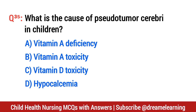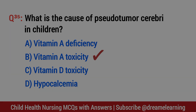Question number 35. What is the cause of pseudotumor cerebri in children? The right option is B: vitamin A toxicity.